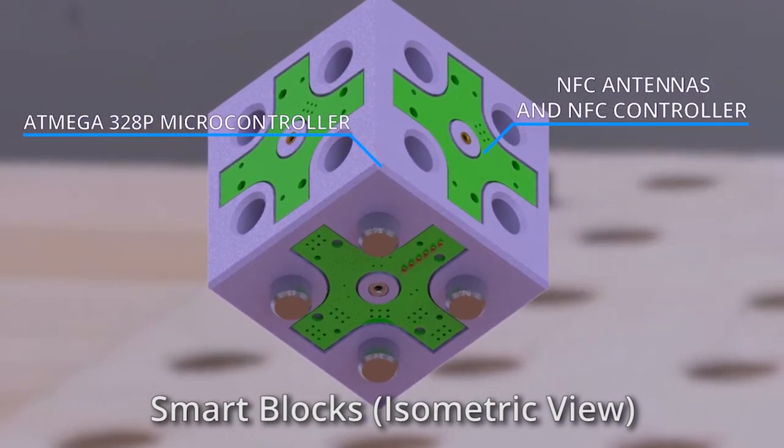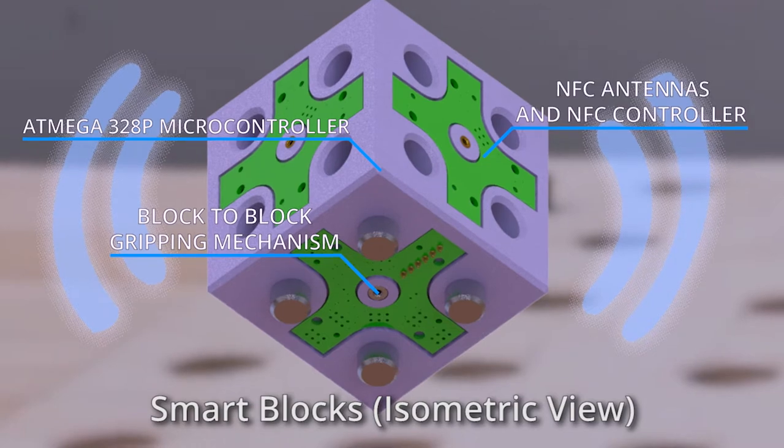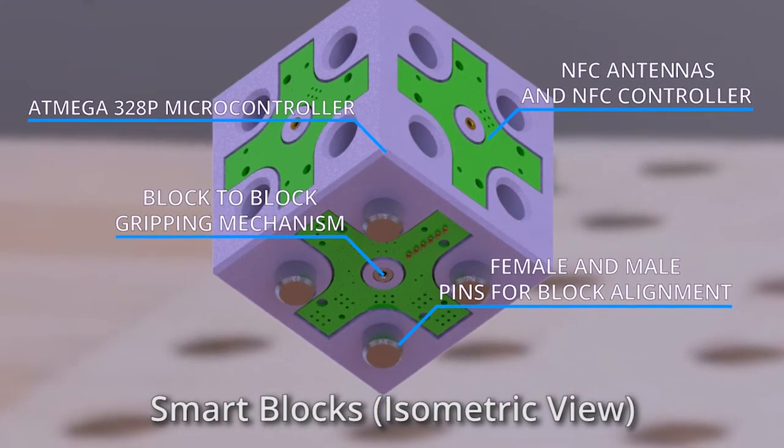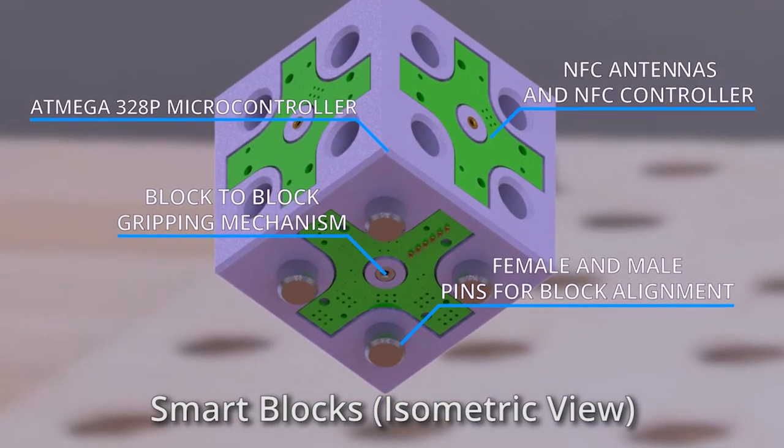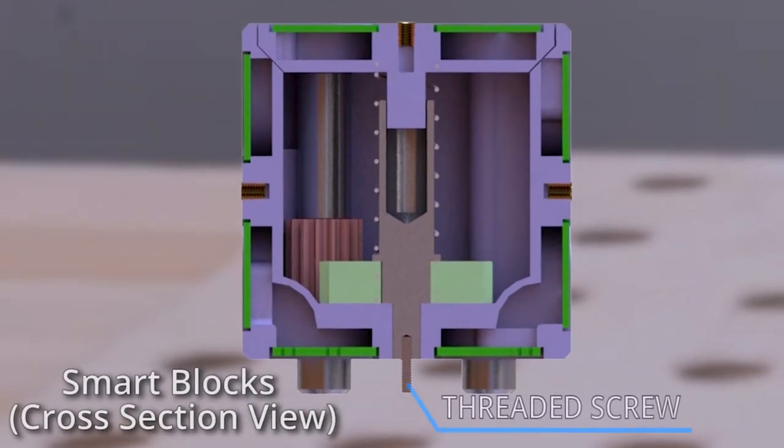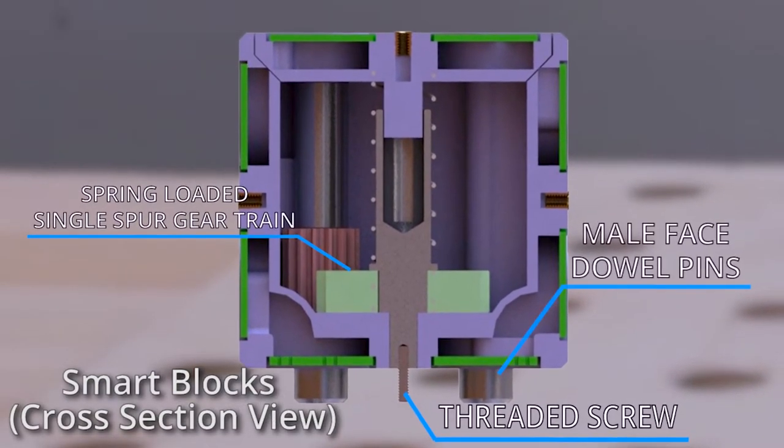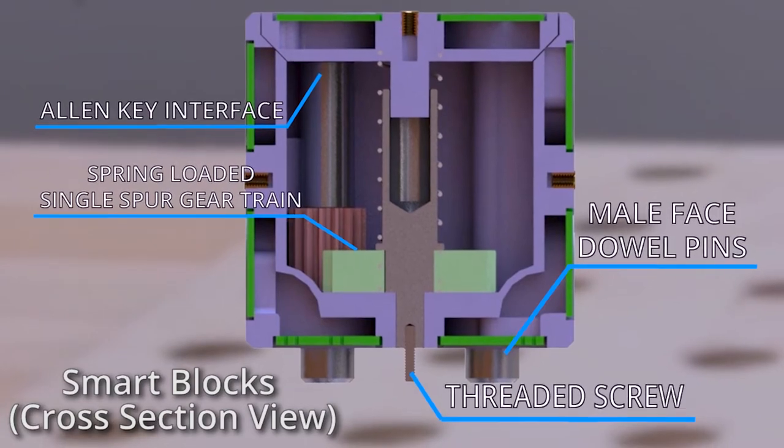These smart blocks are able to communicate with one another through NFC and can convey information such as their position and status. A robot holding onto a block is then able to use the Allen key interface to actuate the threaded screw and install the block into the structure.